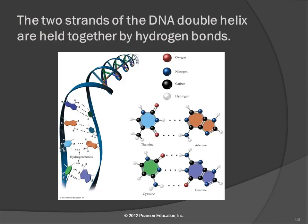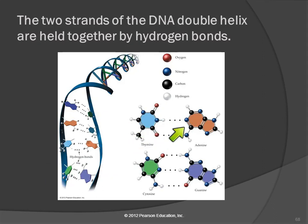Hydrogen bonding is important for all kinds of things. DNA forms a double helix — two strands held together by hydrogen bonds between the bases: two hydrogen bonds form between thymine and adenine, and three between cytosine and guanine. Without hydrogen bonding, DNA would not work.